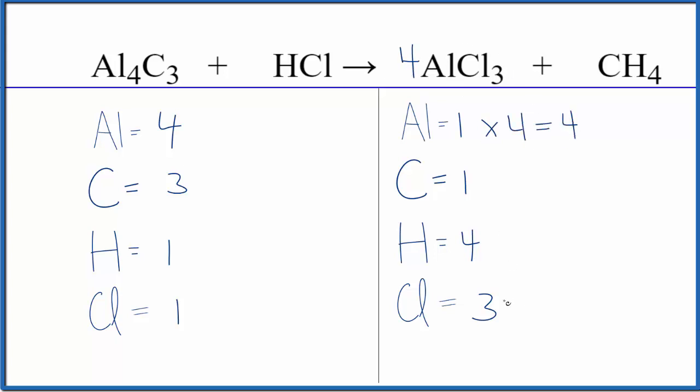And then for the chlorine, three times the four, that would give us 12 chlorine atoms. Probably a good idea to put a 12 in front of the HCl right now and see what happens. One times the 12, that would give us 12. Those would be balanced.